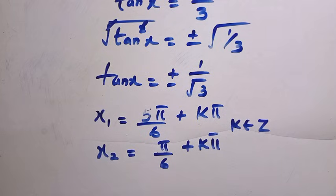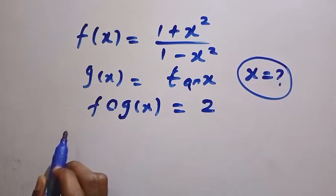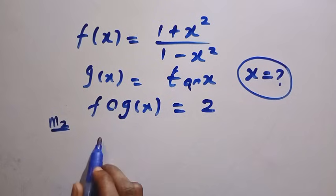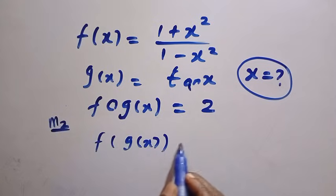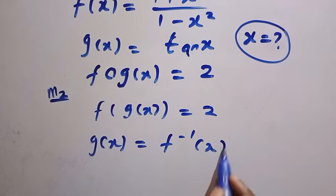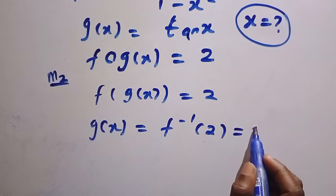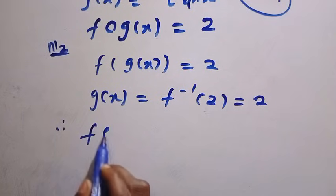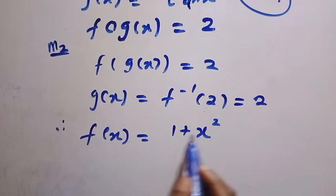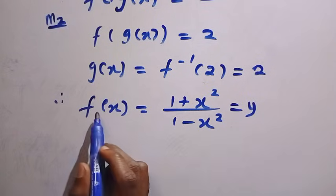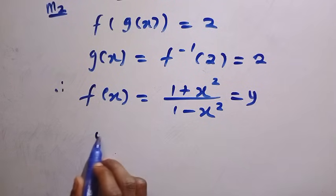Let's get into the second method. In this second method, I'm going to use an inverse method to solve this. Starting again from f(g(x)) = 2, if I take the inverse of both sides, we have g(x) = f⁻¹(2). To find f⁻¹, recall f(x) = (1 + x²) / (1 − x²). If I let this equal y, then x = f⁻¹(y).